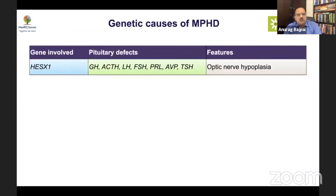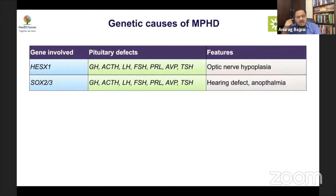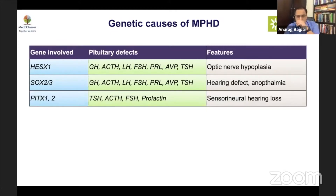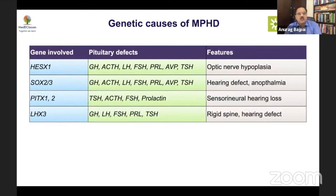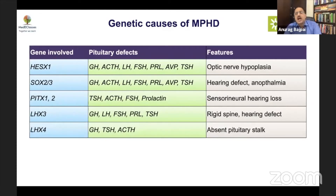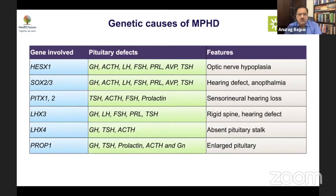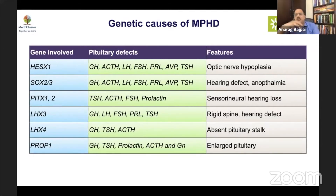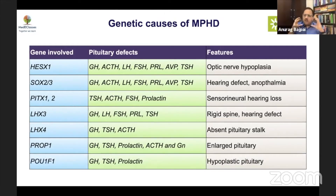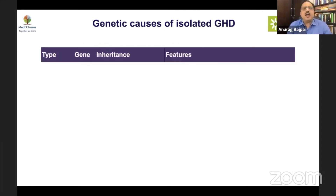MPHD can be part of HESX1 causing optic nerve hypoplasia, SOX2 and SOX3 causing hearing and eye defects, PITX1 and PITX3 causing sensorineural hearing loss, LHX3 causing a spine problem, and absent pituitary stalk in LHX4. PROP1 may actually cause an enlarged pituitary temporarily, looking like a pituitary mass, while small pituitary is seen in POU1F1. If you have extra-pituitary manifestations, proximal genes are involved; if you have specific pituitary morphology, we are dealing with PROP1 or POU1F1.